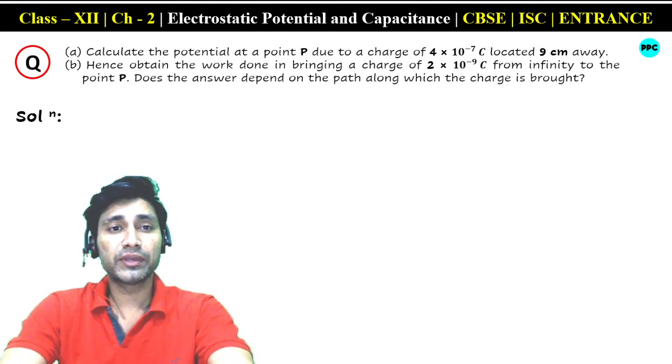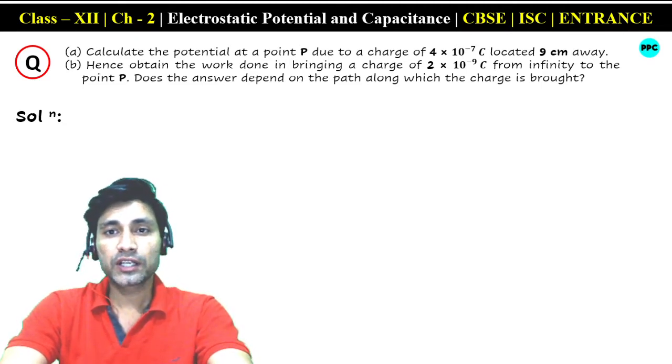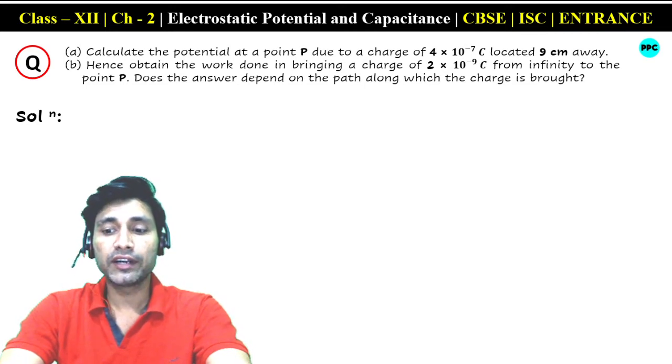Students, read the question carefully. What is given? Calculate the potential at a point P due to a charge of 4 × 10⁻⁷ coulomb located 9 cm away.